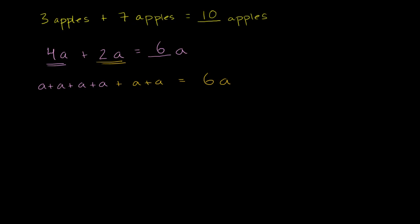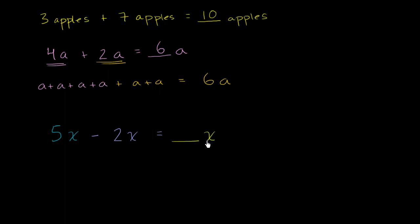Let's get a little bit more abstract. Let's say that I have five X's, whatever X represents — X could be some number, so I have five of whatever that number is. And from that I subtract two of whatever that number is. What would this evaluate to? How many of these X's would I now have? So 5X minus 2X is going to be what times X? Well, if I have five of something and I subtract two of those away, I'm going to have three of that something left. So this is going to be equal to 3X — five X minus 2X is equal to 3X.